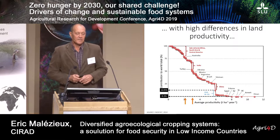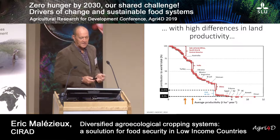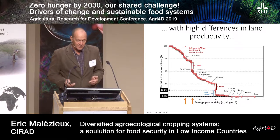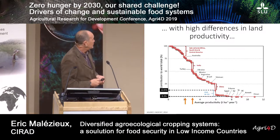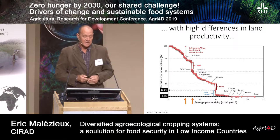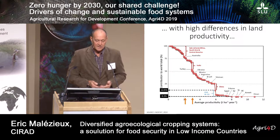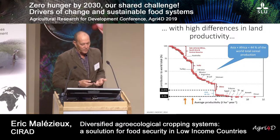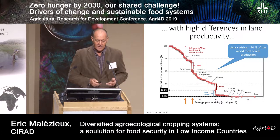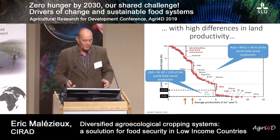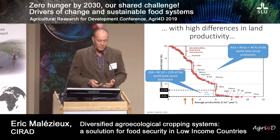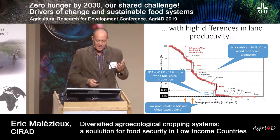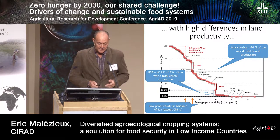But this occurs with very high differences in land productivity. As you can see on this graph, the x-axis is the average productivity per nation and the y-axis shows contribution to the world total food production. Countries with very low average productivity contribute a lot to global food production — for instance, Asia and Africa contribute more than 40% of world total cereal production. On the opposite, the USA and the West European Union contribute only a little bit more than 10% of world total cereal production.